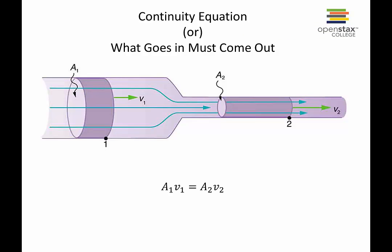The first thing we're learning today is the continuity equation. It's based on a very simple idea: whatever goes into one side of a tube or pipe has to come out the other side. If you have a plug of water moving along at some speed and the pipe gets smaller, that water has to go faster. This gives us the equation a1v1 = a2v2.